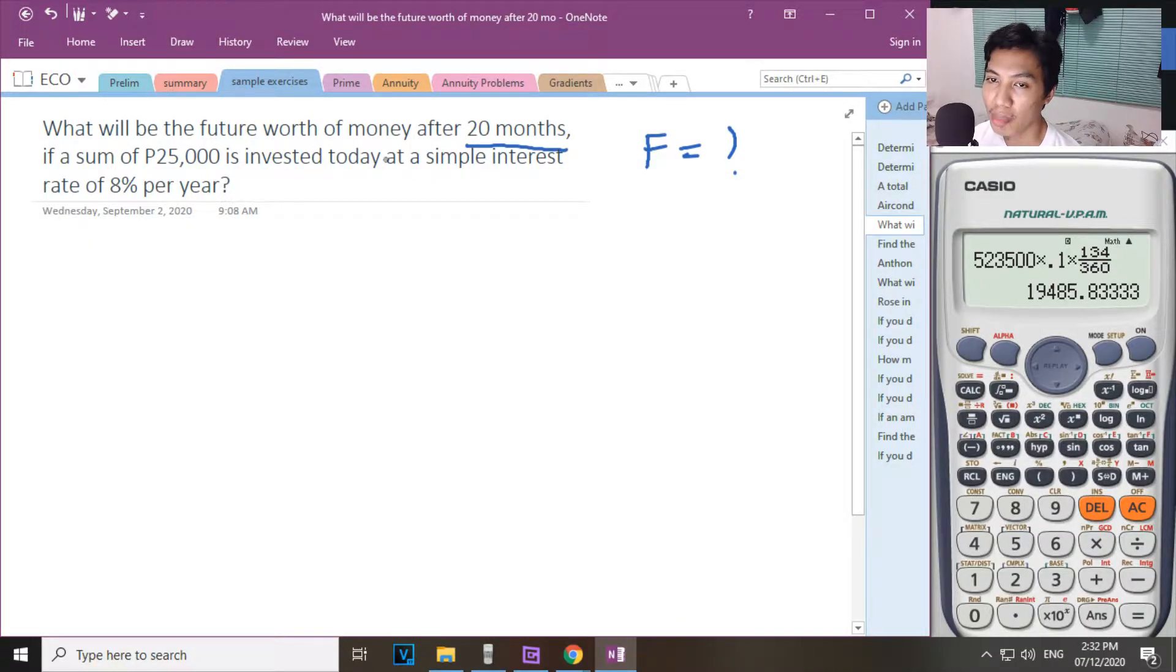You are given N na 20 months if the sum of 25,000 is invested today at a simple interest. Per year po, per year. So yung co-convert mo to into year. Naka-rate siya 8% per year. Yung P. Ano ba yung P natin? That is 25,000.